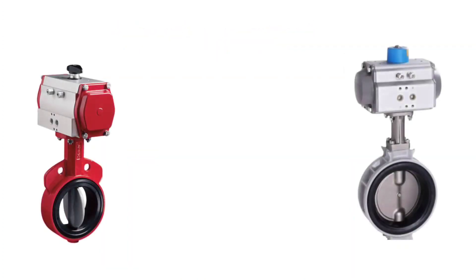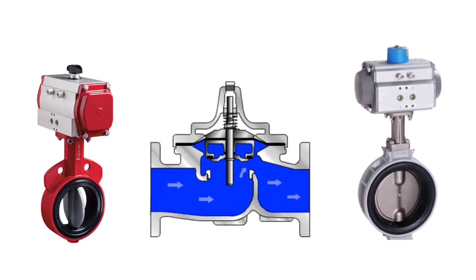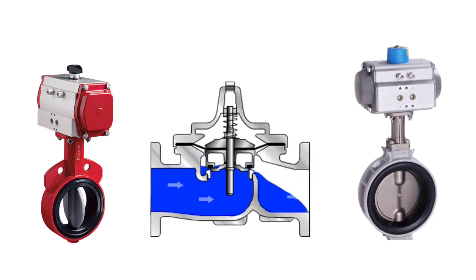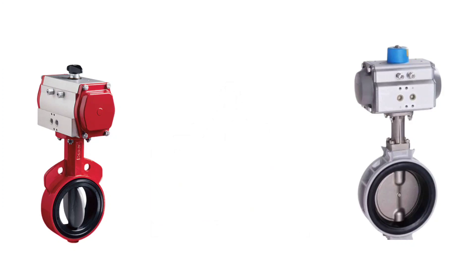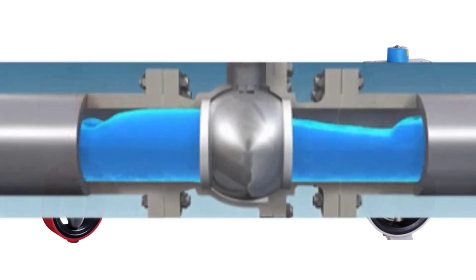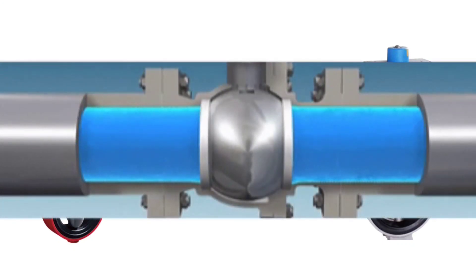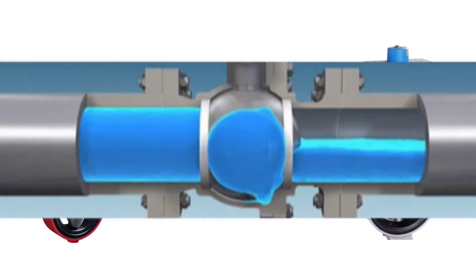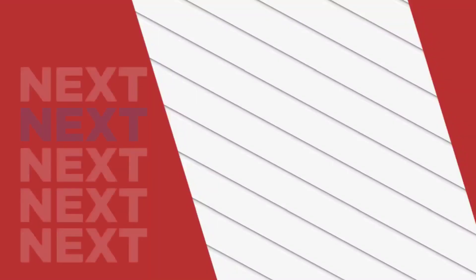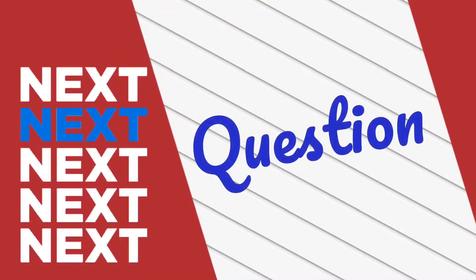On-off valves are used where there is a need to turn on or off the flow of fluid, or where on-off controlling is needed. Let's take the next question.